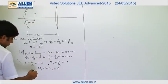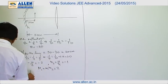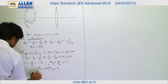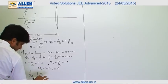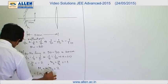1 by f in air equals to mu of lens minus 1 into 1 by r1 minus 1 by r2.